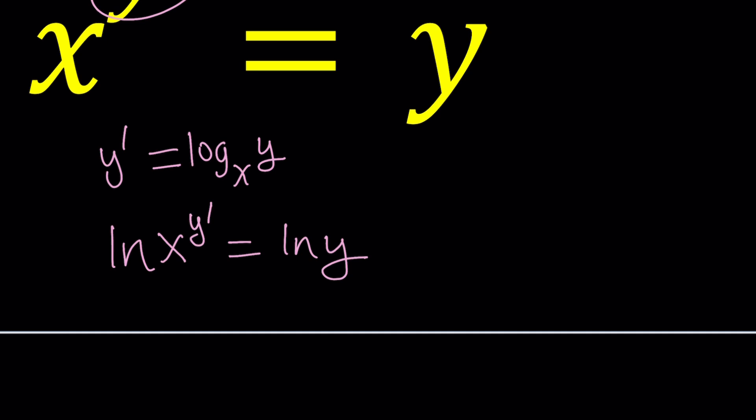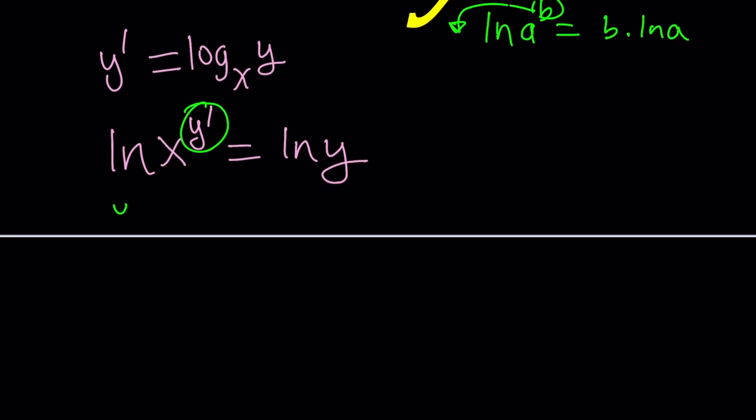And then, by using properties of logarithms, remember, when you have ln a to the b, that can be written as b times ln a. In other words, this exponent can be moved to the front. So now we can go ahead and move this. That becomes y prime times ln x equals ln y. Now, is this better than the original? Probably, because guess what? This is a separable differential equation.